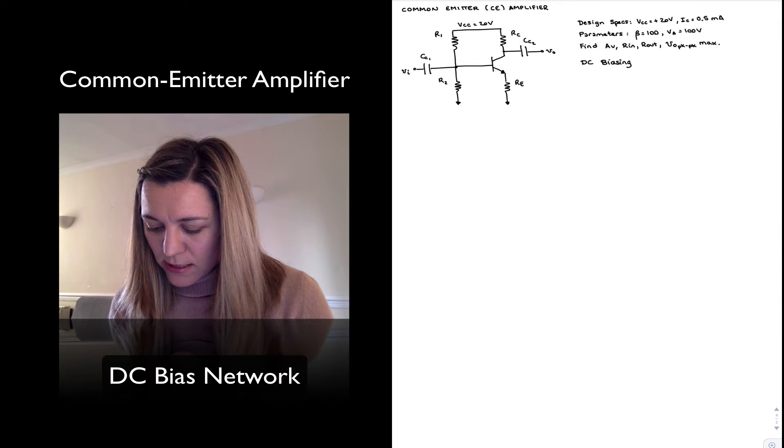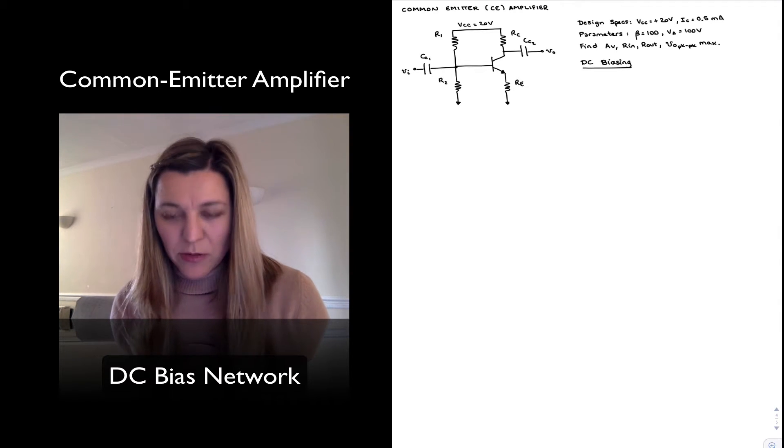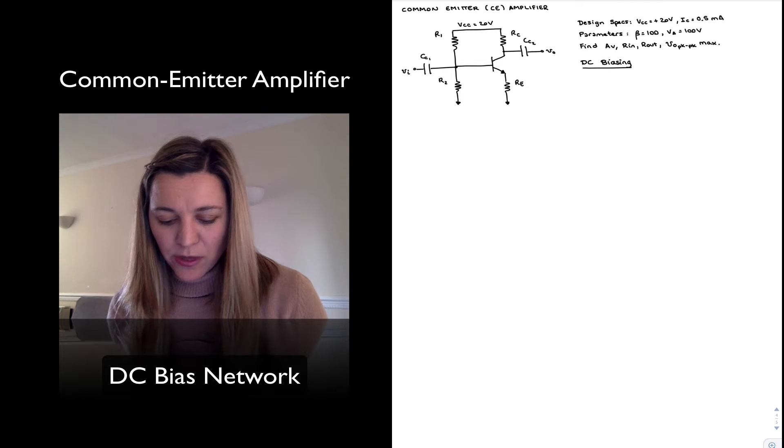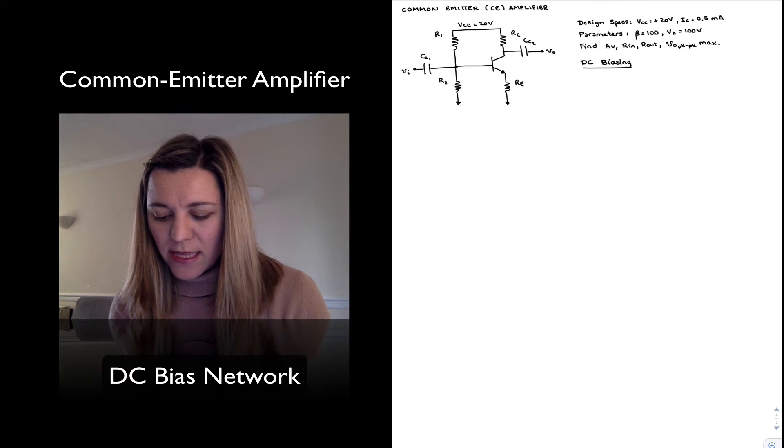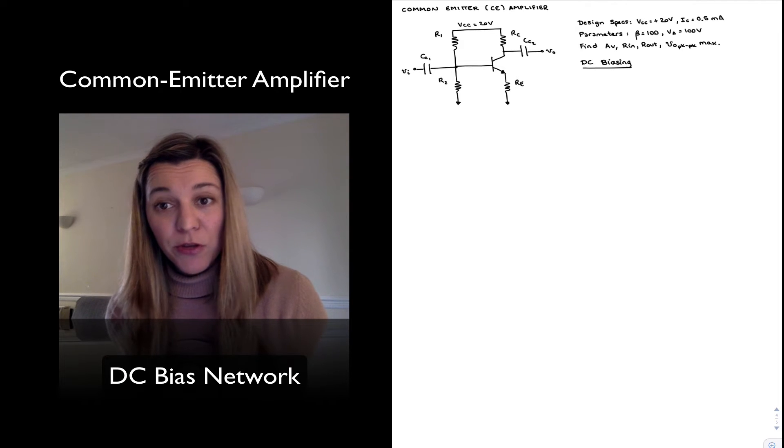Now notice that in this case we are inputting the signal to the circuit through a coupling capacitor which I've labeled as CC1 and we are taking the output out of the collector through another coupling capacitor which is labeled as CC2.